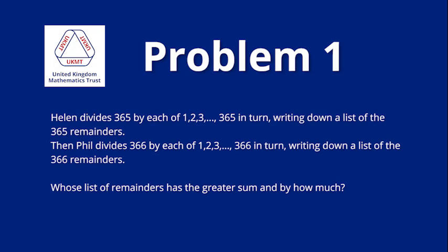Problem 1. Helen divides 365 by each of 1, 2, 3, and so on up to 365 in turn, writing down a list of the 365 remainders.